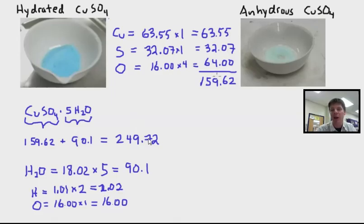The molar masses that we've calculated, the 159.62 applies to the dry form of copper sulfate. So this is the form which has had the water removed. 249.72 applies to the wet form or the hydrated form. This is where we've got the copper sulfate and the water incorporated into it.